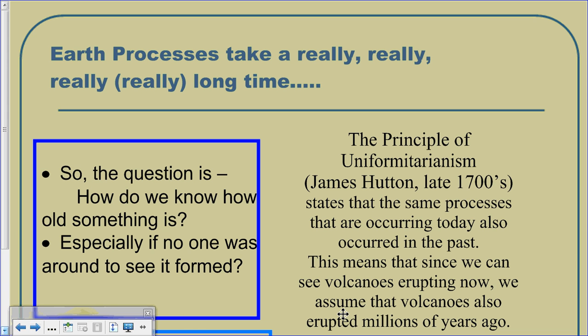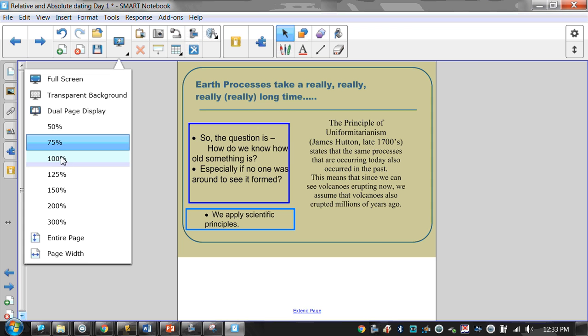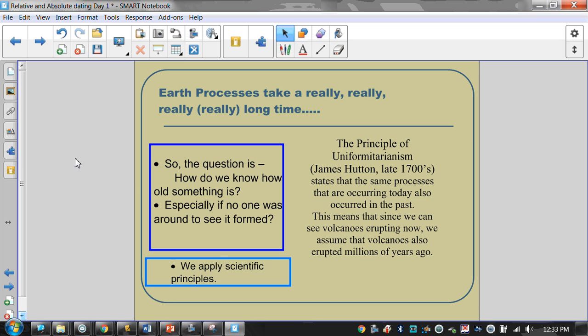Earth is about 4.6 billion years old, and the processes on Earth really do take a long time. When we speak about erosion and weathering, sometimes things happen fast — like a landslide — but for the most part, things on Earth happen pretty slow. So when we're looking at geologic time, we need to keep in mind that not everything happens fast. Sometimes these occurrences happened with no recorded human history. We say a big asteroid hit the planet 65 million years ago and wiped out all the dinosaurs, but how do we actually know that?